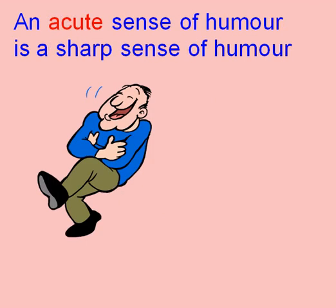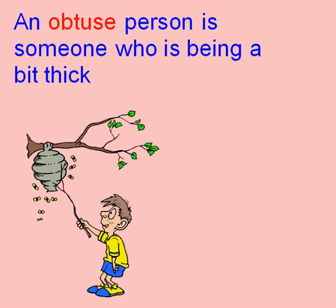If someone has a sharp sense of humour, you can say they have an acute sense of humour — an acute angle is a sharp angle. If someone is being a bit thick, you can say they are being obtuse — an obtuse angle is a big thick angle.